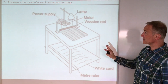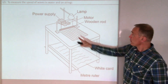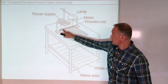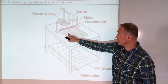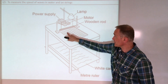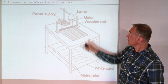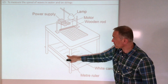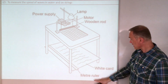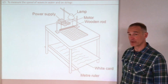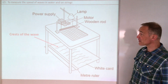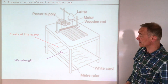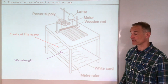Our first experiment is a ripple tank. We've got a motor which makes this wooden beam vibrate up and down, producing waves. These are the crests of the waves you can see in the picture. We've got a lamp which produces an image of the crests on a piece of paper below, and a ruler to measure. The distance between two crests is a wavelength.